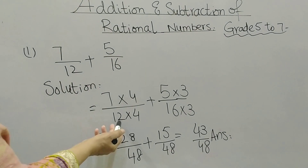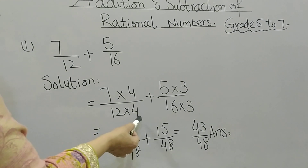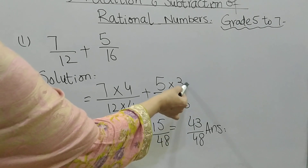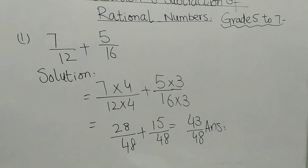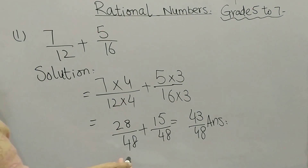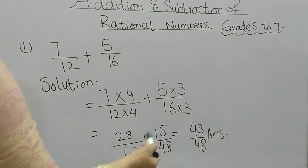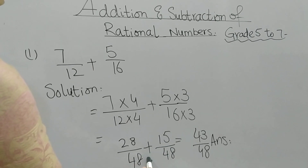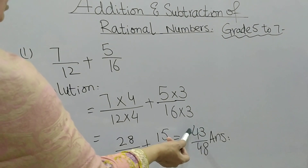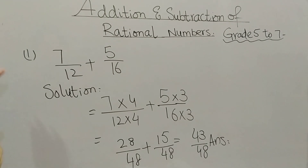12 fours are 48 and 16 threes are 48, so the LCM is 48. Since I am multiplying 12 by 4, I also multiply 7 by 4, giving 28 over 48. Since I am multiplying 16 by 3, I also multiply 5 by 3, giving 15 over 48. The denominators are now the same, so I add 28 and 15 to get 43. The answer is 43 by 48.